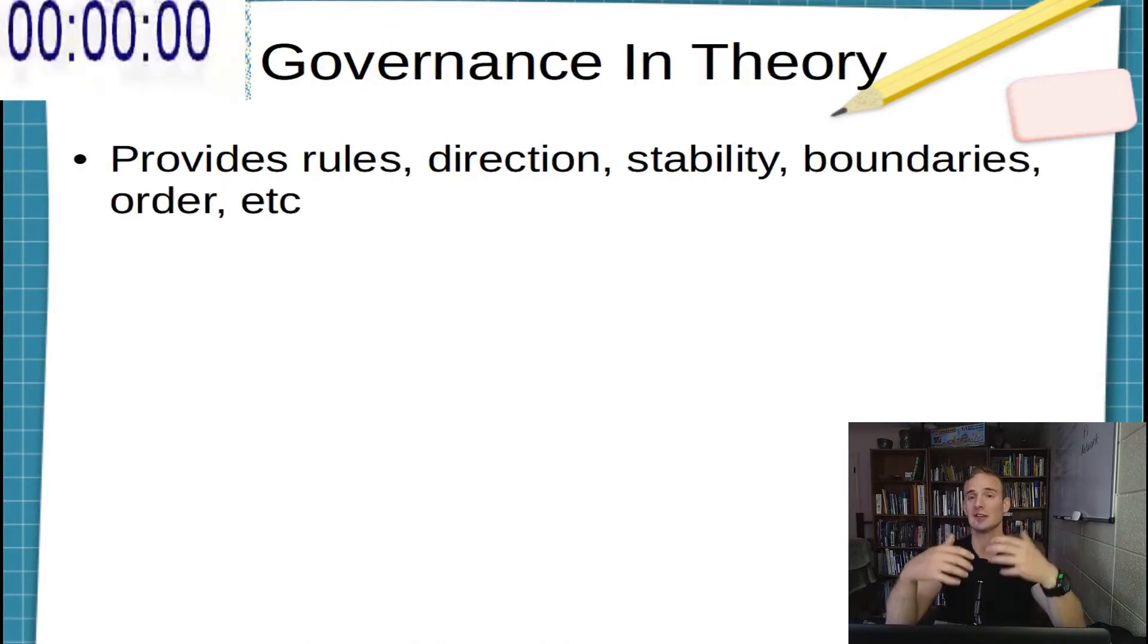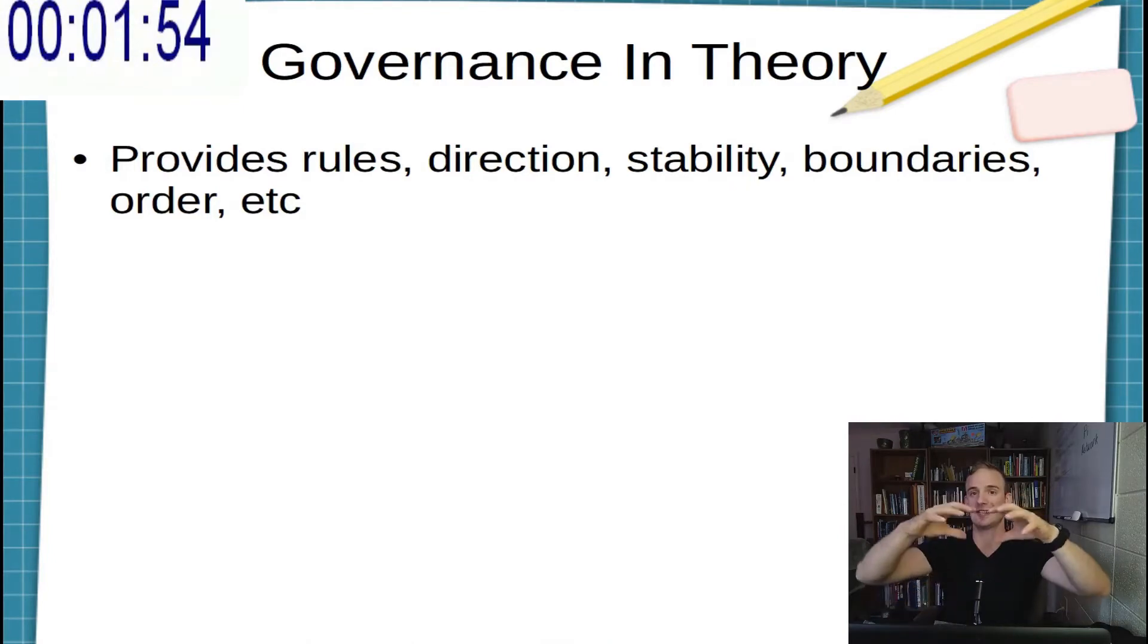Now, a governance token is simply a way of providing rules, direction, stability, boundaries, order in a cryptocurrency ecosystem.